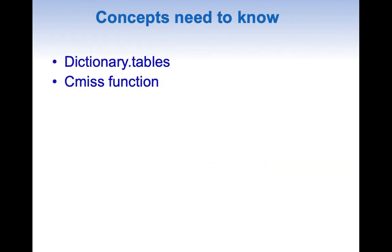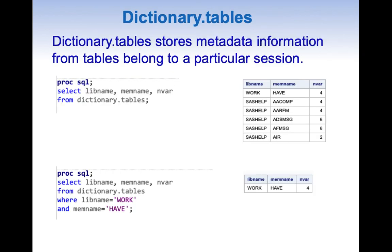There are two concepts we need to know: the first one is dictionary.tables, and the other is the CMISS function. Dictionary.tables stores metadata information about the tables which belong to a particular session.